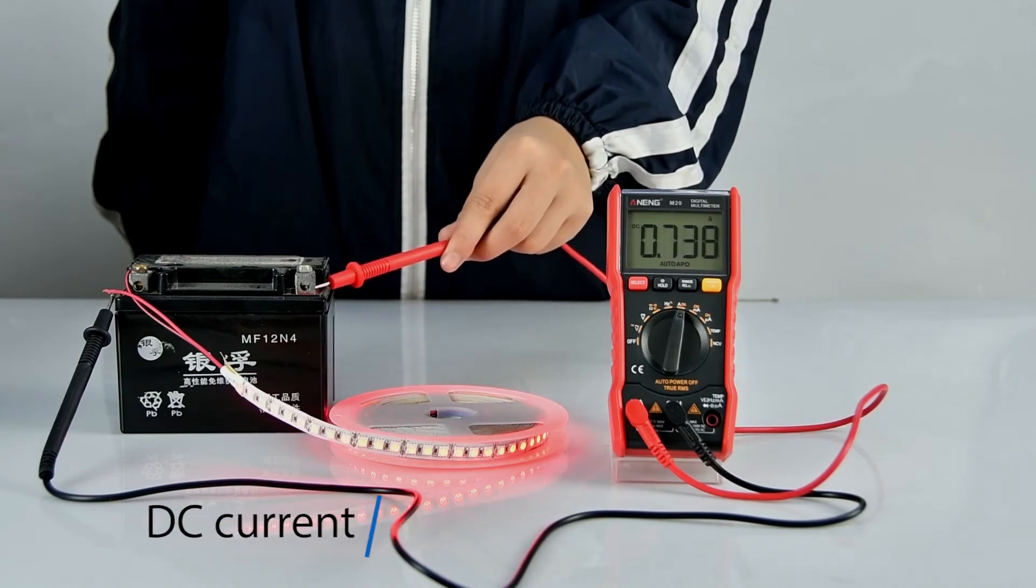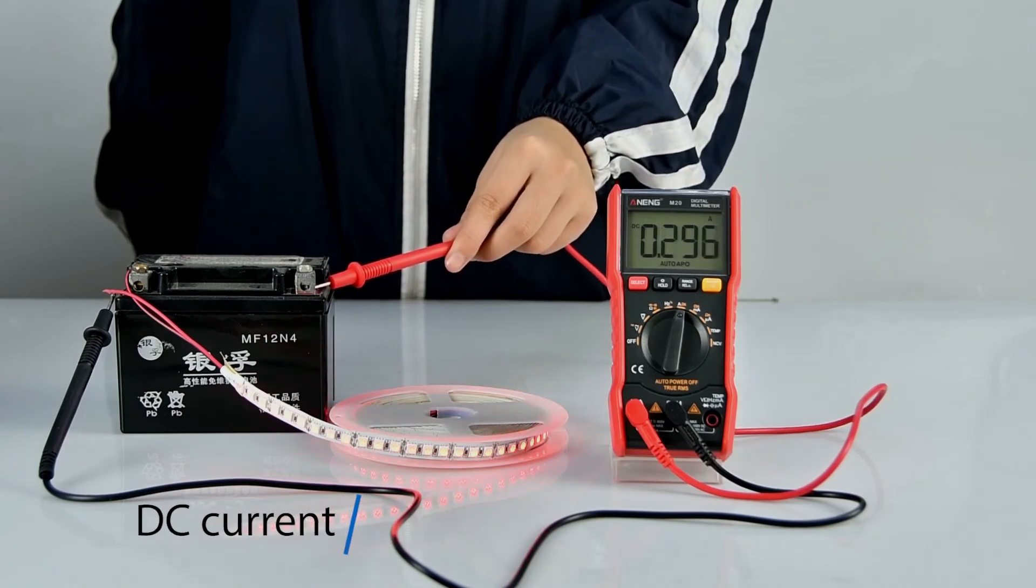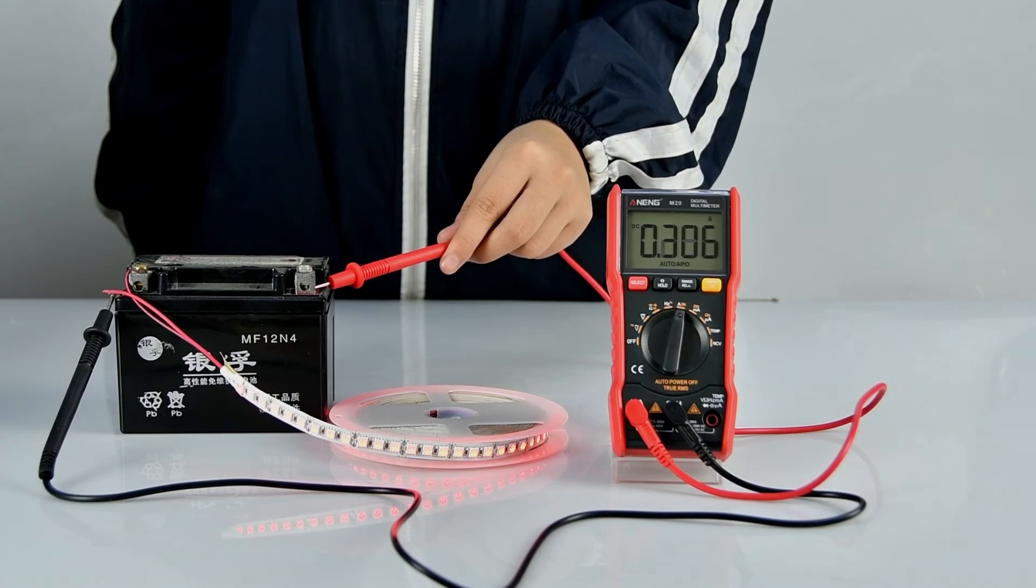DC current measurement must be connected in series when measuring, not directly.